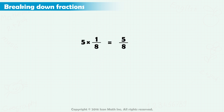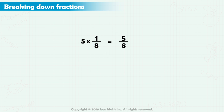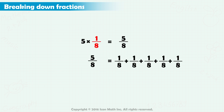So, if we need to multiply a number by a unit fraction, the result will be that number in the numerator, and the denominator will remain unchanged. This is because, in the result, we will have as many units as the number we are multiplying by.